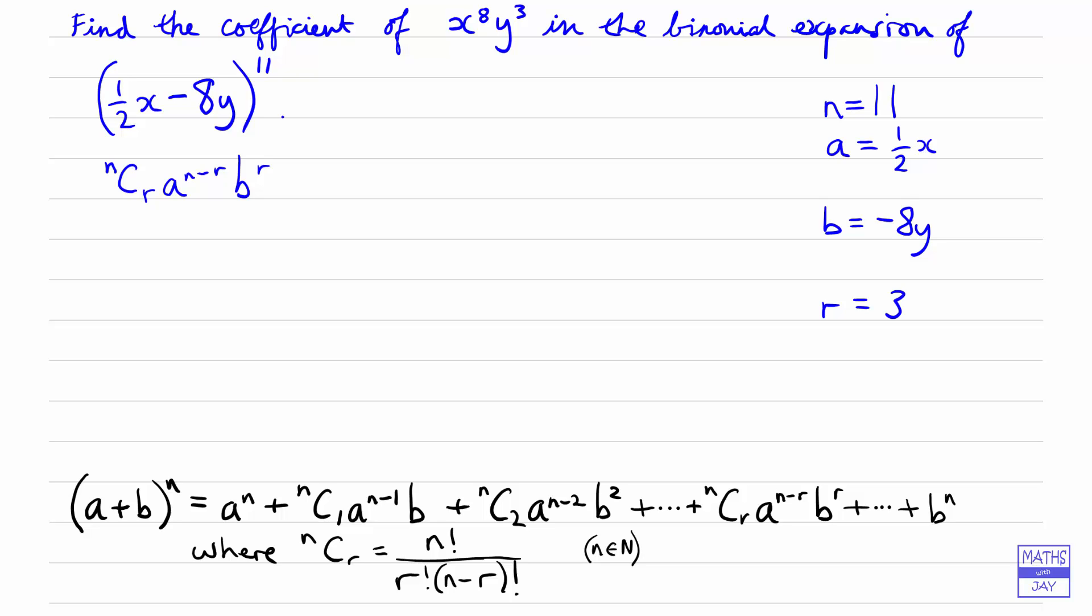So now we're just going to write down what this is equal to. We've got 11C3, and then we're multiplying that by a half x to the power of 8. And then b is minus 8y, and that's to the power of 3.